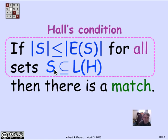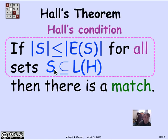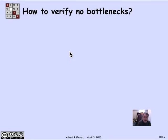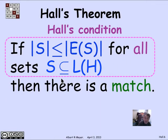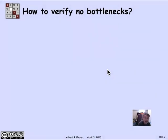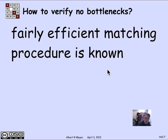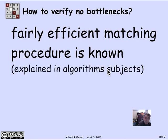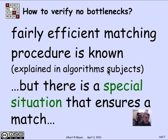We have now formally defined bipartite graphs, matches in bipartite graphs, and Hall's theorem — that there is a match when Hall's condition is satisfied. The puzzle is: how do you verify that there are no bottlenecks? It's pretty hard. The bottleneck condition involves checking every subset S of L(H), and there are exponentially many subsets relative to the size of the graph. In algorithms classes, you'll learn a fairly efficient matching procedure that runs about quadratically for finding perfect matches when they exist.